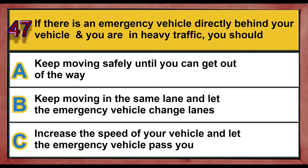Question 47. If there is an emergency vehicle directly behind your vehicle and you are in heavy traffic, you should: A. Keep moving safely until you can get out of the way. B. Keep moving in the same lane and let the emergency vehicle change lanes. C. Increase the speed of your vehicle and let the emergency vehicle pass you. Correct answer is A: Keep moving safely until you can get out of the way.